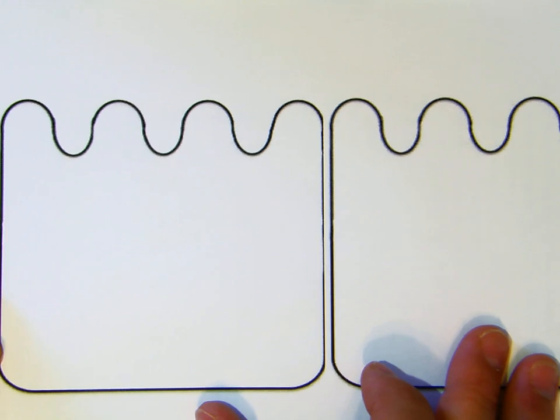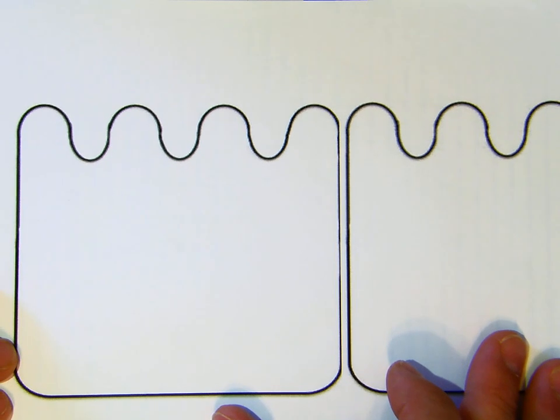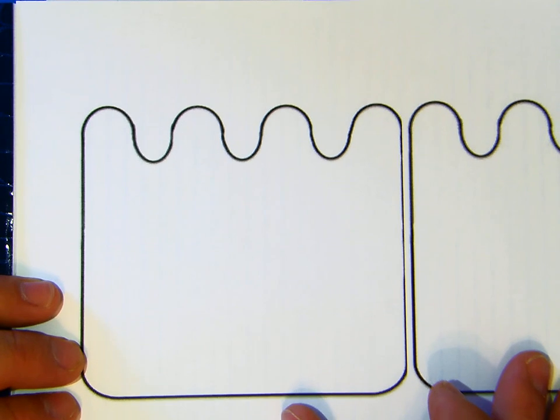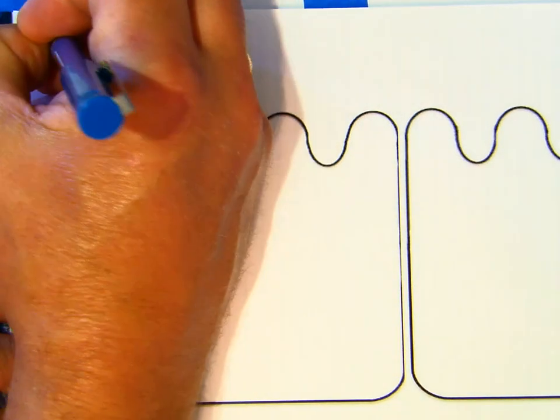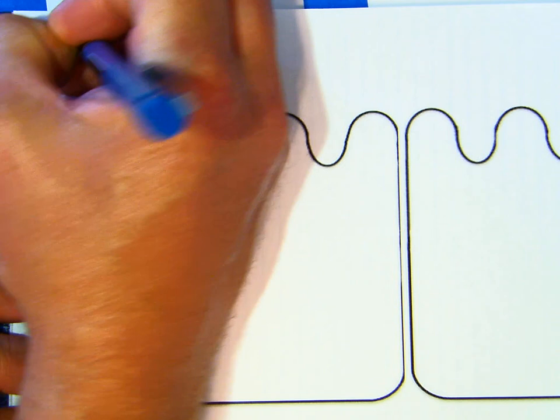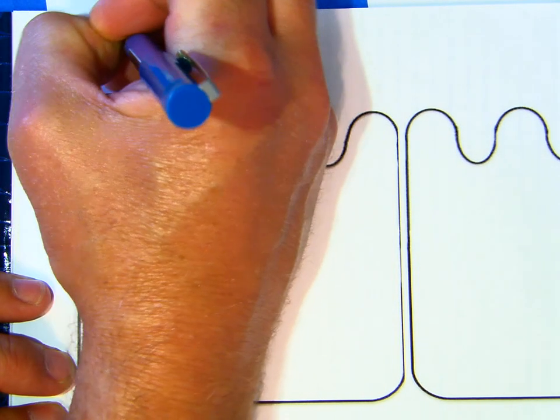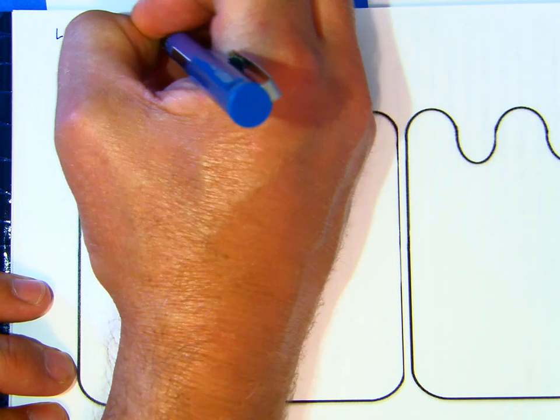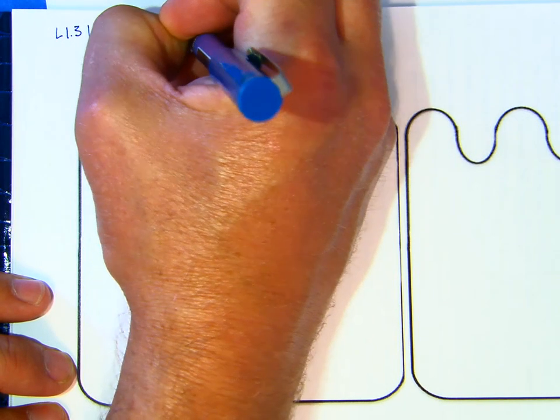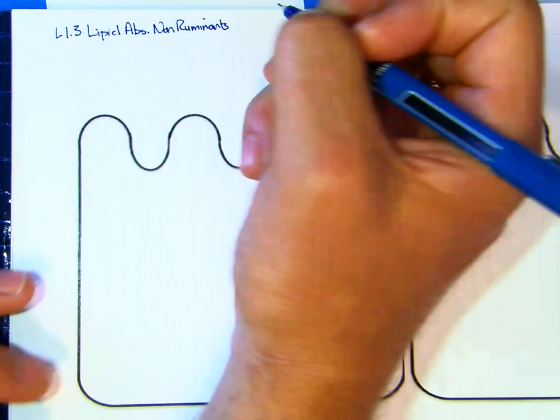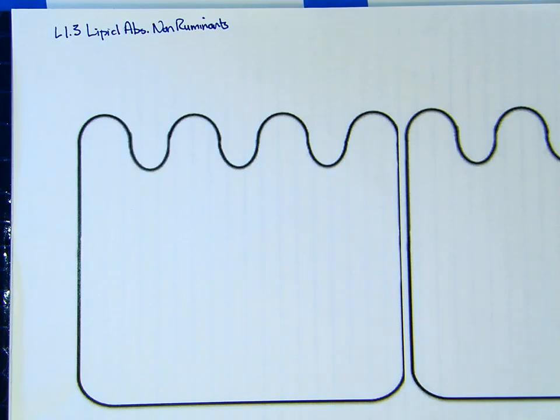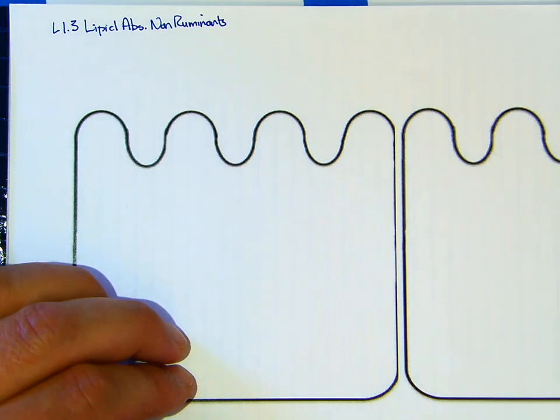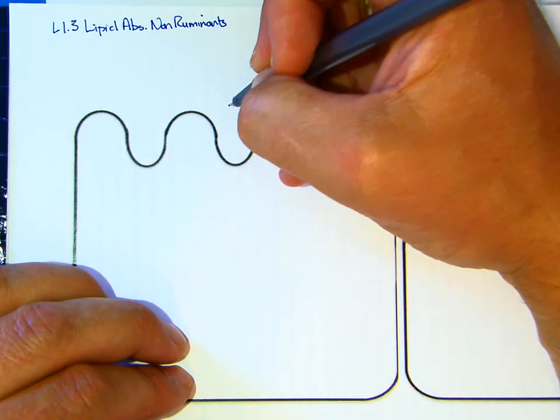Okay, so this will be L1.3, lipid absorption in non-ruminants. We're going to start with drawing a circle, a micelle or a fat particle.